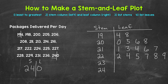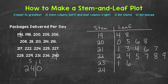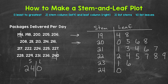Next, 231 — moving to the 230s, so stem of 23 and a leaf of 1. Then 236: leaf of 6. And then lastly, 240: stem of 24, leaf of 0. That's it for our leaves — we have the 190s, the 200s, the 210s, the 220s, the 230s, and the 240s. The stems are the hundreds and tens digits, and the leaves are the ones digits.